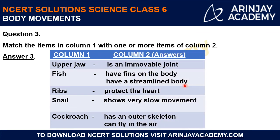Now let's see the answers. Upper jaw — it is an immovable joint; the lower jaw can move but the upper jaw is fixed. Fish — fish have fins on the body, which help them swim, and also have a streamlined body, a shape naturally evolved to face little resistance while swimming. Ribs — ribs are a set of bones that protect the heart, providing a cage-like structure protecting the heart and other important organs.